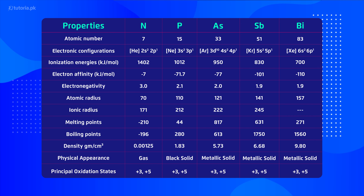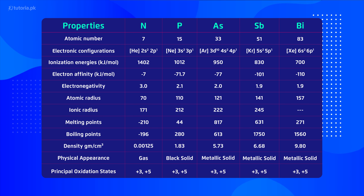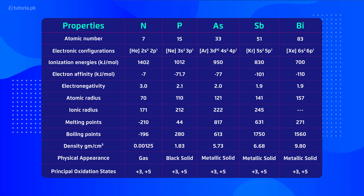Group 5A elements have oxidation states of typically plus three or plus five. When looking at various properties: ionization energy is highest for nitrogen and decreases down the group. Likewise, electron affinity decreases, and nitrogen is the most electronegative. Atomic and ionic radius increases down the group. Nitrogen is a gas, phosphorus is a black solid, and arsenic, antimony, and bismuth are metallic solids.